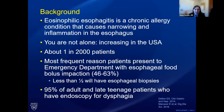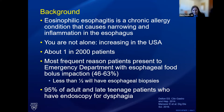EOE is a chronic allergy condition that causes narrowing as well as inflammation in the esophagus. We diagnose it based on symptoms of difficulty swallowing as well as biopsies of the esophagus showing at least 15 eosinophils present. This condition is really increasing in the United States — it's up to about 1 in 2,000 patients. It's actually the most frequent reason patients present to the emergency department for a food impaction, when food gets stuck and can't be removed by swallowing or drinking liquids.